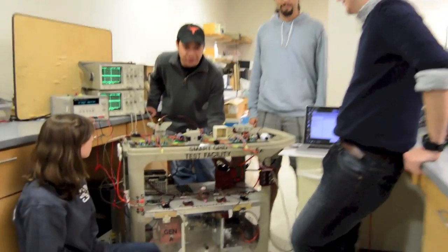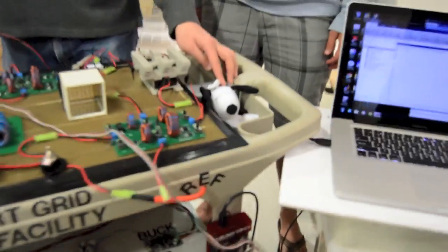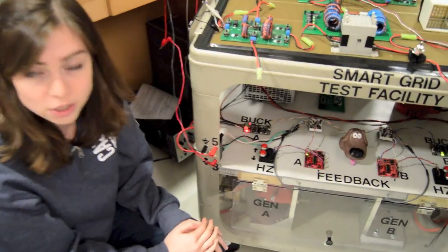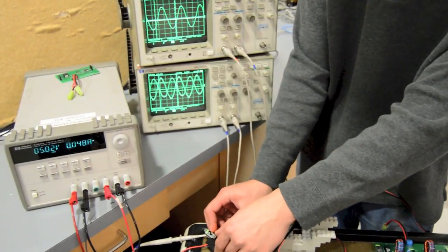For the smart grid test facility, we're going to start off by turning on the reference generator and then the 24-volt DC supply. Then turn on generator A by pressing the button on the MSP, and we also have the option to change the alternator frequency. Then we'll sync the two waveforms when the peaks match. We'll do the same thing for generator B.